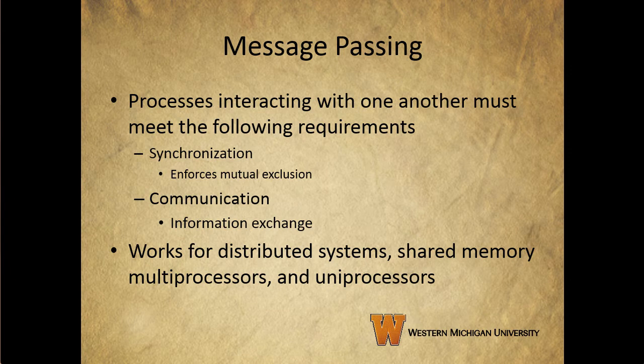When we have multiple processes interacting with one another, they have to meet the following requirements. They have to be synchronized to enforce mutual exclusion, which we've talked a lot about in Chapters 4 and 5, and they also have to deal with communication to exchange information.